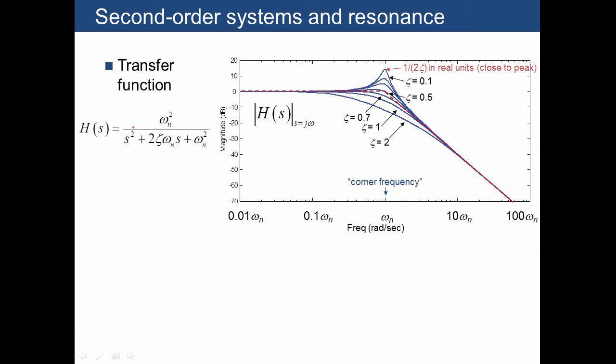The behavior of second order systems is also described by this frequency response plot that we've already seen. This has a slope of zero for low frequencies and a slope of minus two for high frequencies. But of particular interest here is what happens near the natural frequency, where we already know the value. We just have to plug in omega equals omega n. And what we discover is that this is just equal to 1 over 2 zeta at omega equals omega n.